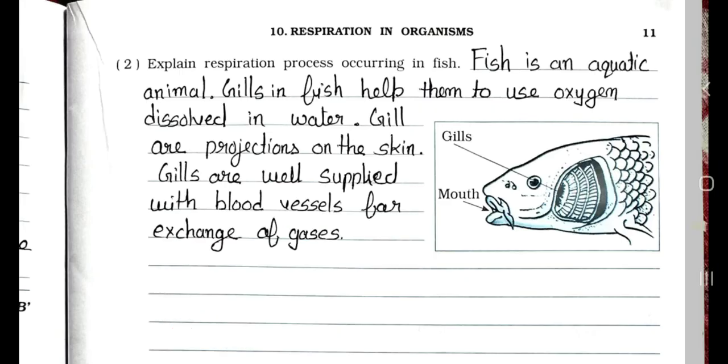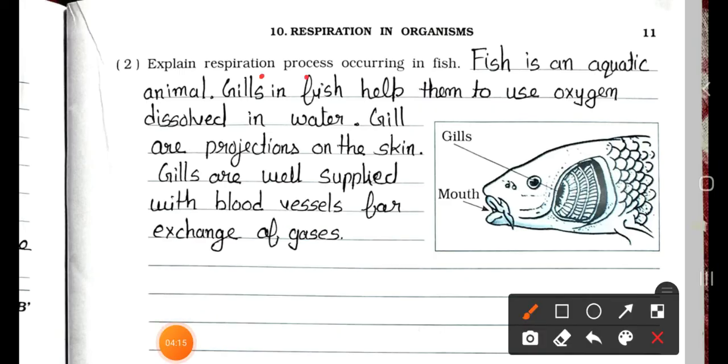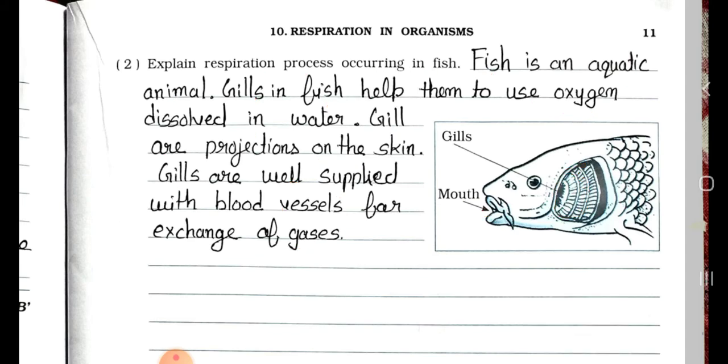Now we will see the next page. Question number 2: Explain respiration process occurring in a fish. See here fish, this is a gill and this is a mouth. Fish is an aquatic animal. Gills in fish help them to use oxygen dissolved in water. Gills are projections on the skin. Gills are well supplied with blood vessels for exchange of gases.